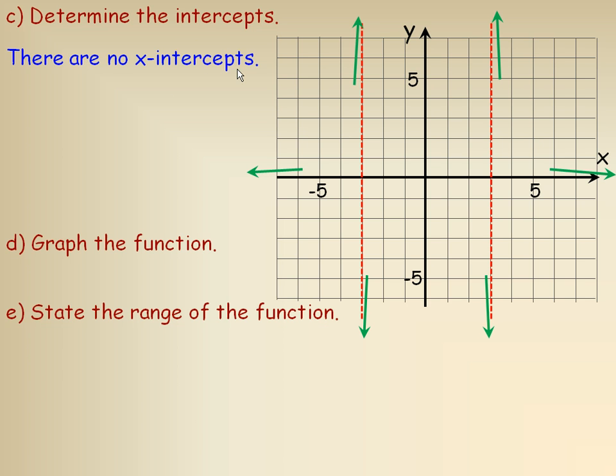Now, there are no x-intercepts, and I'll discuss why here. First of all, you see the horizontal asymptote is y equals 0, or the x-axis. Notice this insinuates that it does not ever touch the x-axis, because the x-axis actually is a horizontal asymptote.